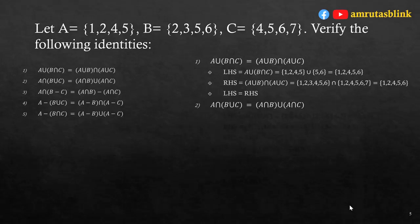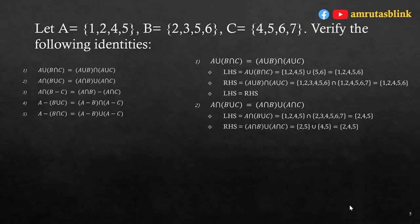For the second identity: A∩(B∪C) = (A∩B)∪(A∩C). LHS: B∪C = {2,3,4,5,6,7}, so A∩(B∪C) = {1,2,4,5}∩{2,3,4,5,6,7} = {2,4,5}. RHS: A∩B = {2,5} and A∩C = {4,5}, so (A∩B)∪(A∩C) = {2,4,5}. LHS equals RHS, so the second identity is verified.